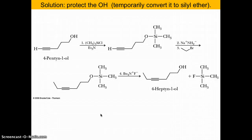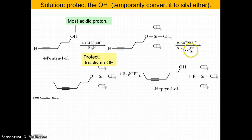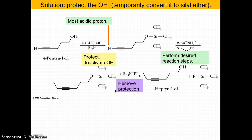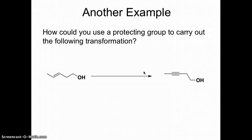So how do we use protecting groups here? First, since the alcohol hydrogen is most acidic, we protect the alcohol with a silyl group — a chlorosilane and base — giving a silyl ether that won't react. Now we can add sodium amide to deprotonate the alkyne hydrogen, carry out the alkylation, and as the very last step remove the protecting group. Fluorine and silicon form a very strong bond, so we employ TBAF (tetrabutylammonium fluoride) to remove the silyl group and get our alcohol back.